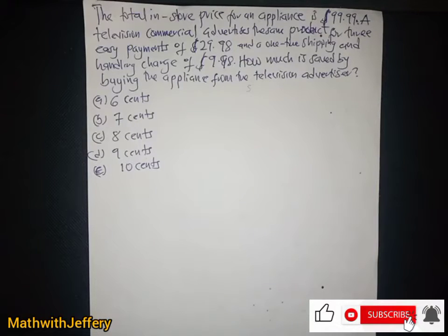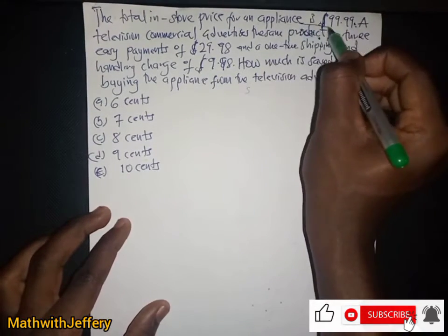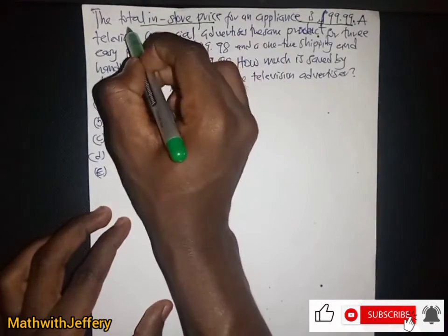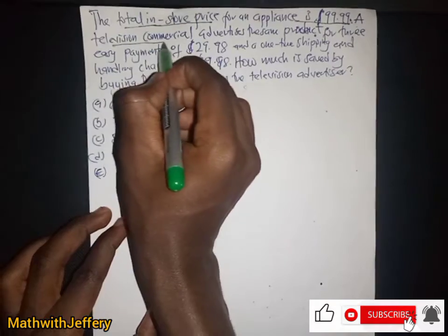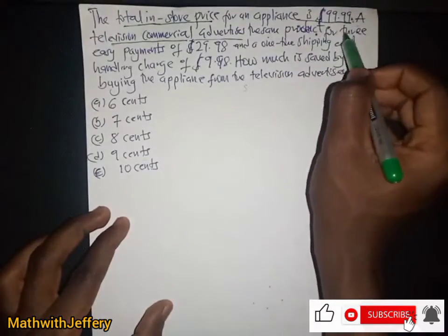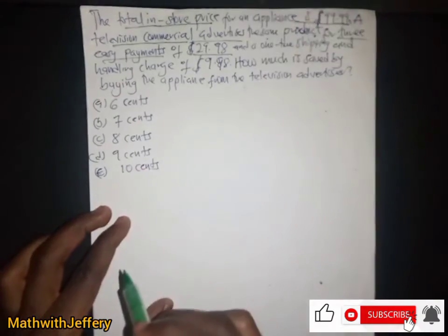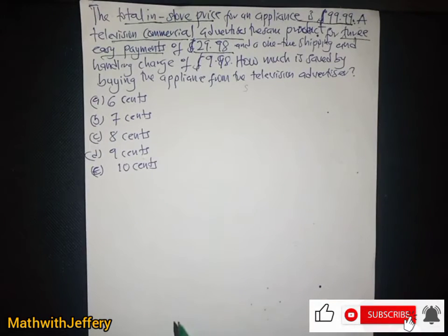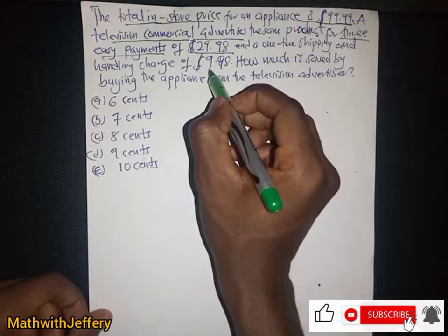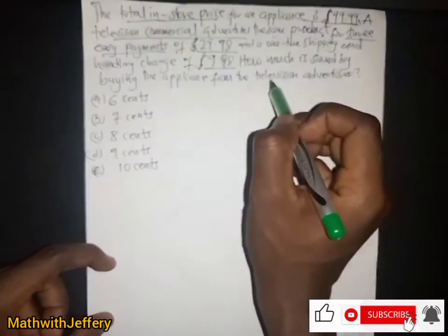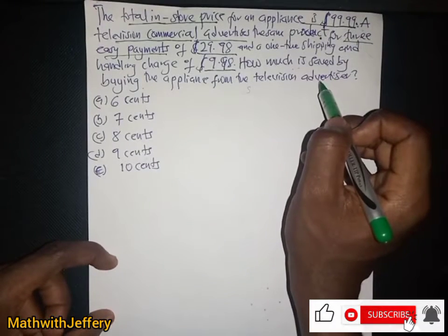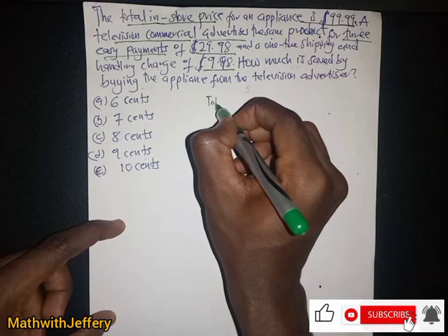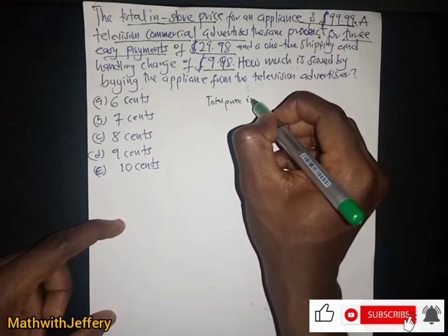Hello there, welcome once again. In this session we have a math problem. The question says the total in-store price for an appliance is $99.99. A television commercial advertises the same product for three easy payments of $29.98 and a one-time shipping and handling charge of $9.98. How much is saved by buying the appliance from the television advertiser?